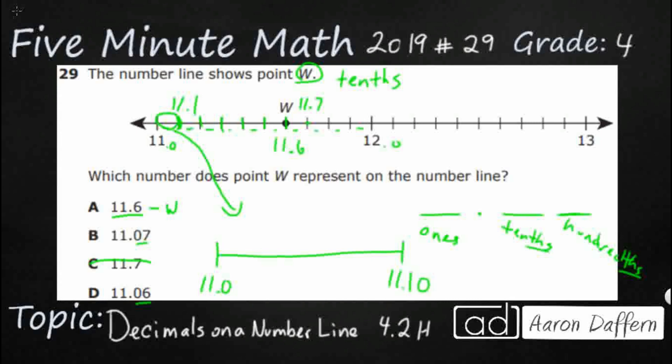And once we do that, that becomes a little bit easier because we see here's my eleven point oh five. We can actually look at that eleven point zero zero. Now it becomes really easy. So here's going to be my eleven point oh six. Here's going to be my eleven point oh seven.